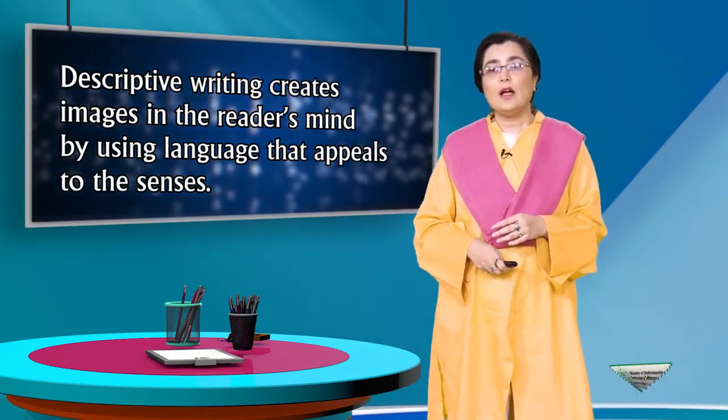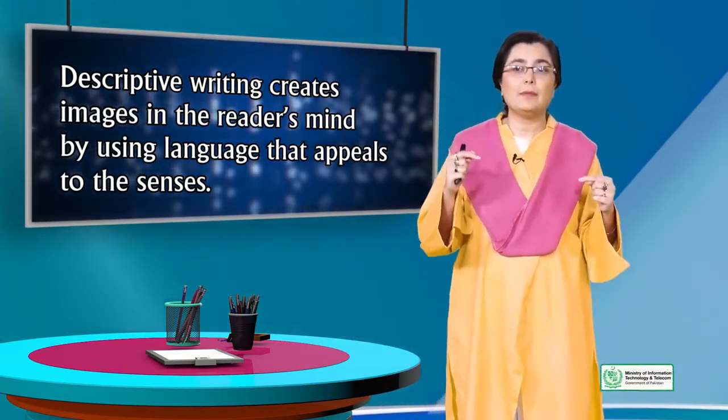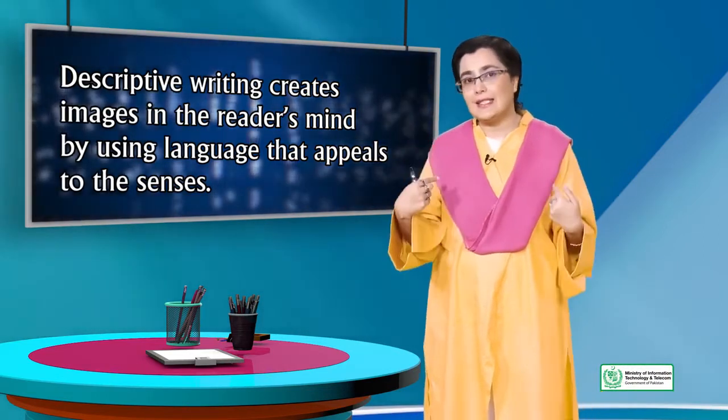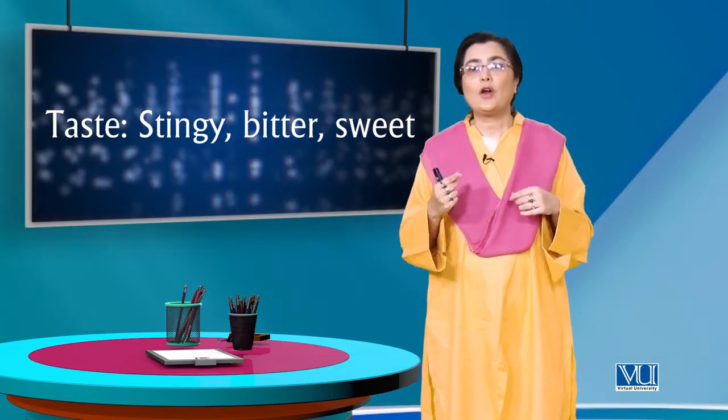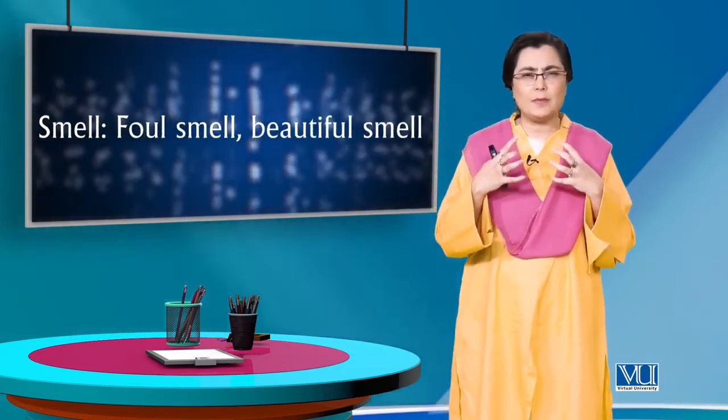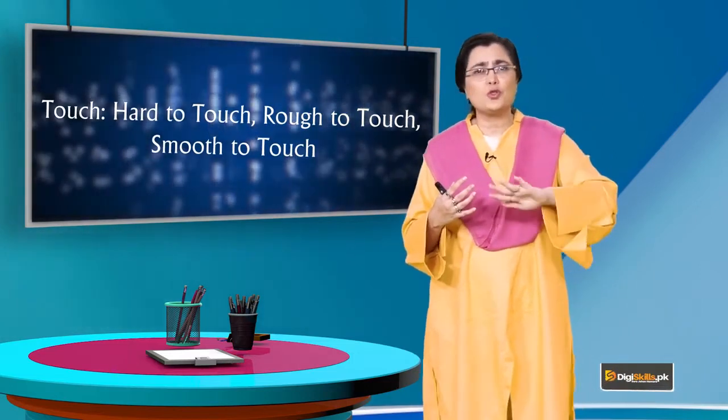Yeh zara se long writings hoti hain — lambe lambe tarikay se likhi jaati hain. They are not very concise because you are putting in so much detail. Description writing creates images in the reader's mind by using language that appeals to the senses. When we talk about taste — it was tangy, bitter, sweet. Smell — it was a foul smell, a beautiful smell. Touch — it was hard, rough, or smooth to touch. These are the words that actually appeal to the senses. Aap usko relate kar sakte hain apne kisi na kisi sense ke saath, tab jaake wo description banti hai — wo ek 3D life form lena shuru ho jaata hai, even though it's written word.